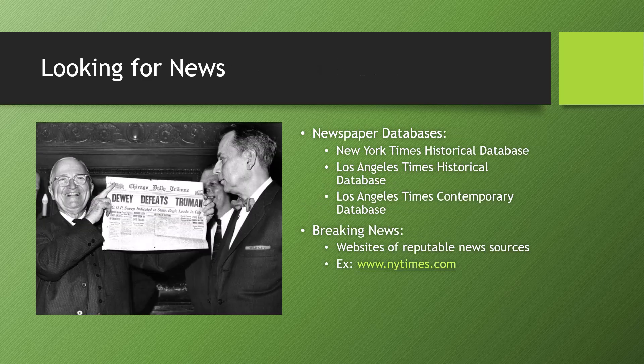What about news articles? The library actually has some excellent news databases with historical coverage of major papers, including the New York Times and the Los Angeles Times. These sources can help provide you with primary source materials on news events that occurred in the past few decades. If you need coverage of current events or breaking news, however, you might be better off going to the websites of reputable news sources, as these will be the most up-to-date sources of breaking news.